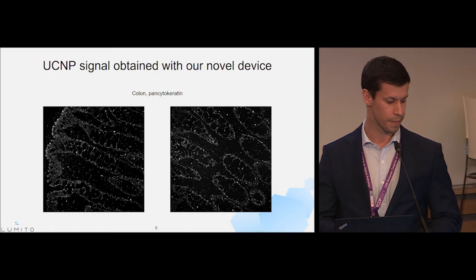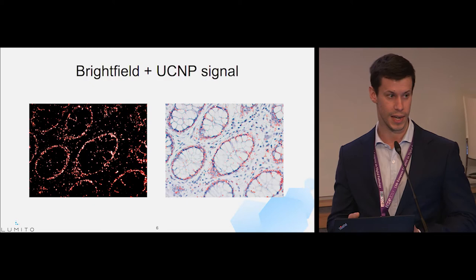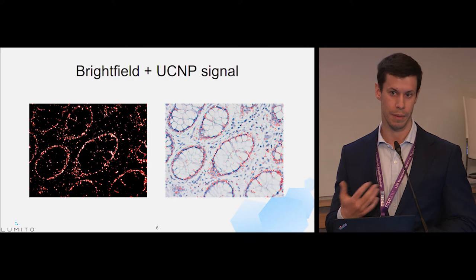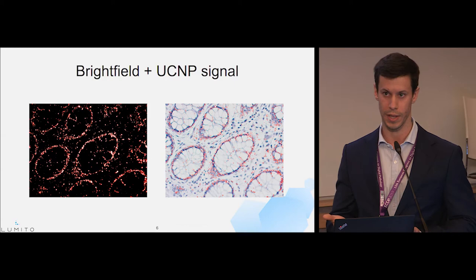Another advantage is that the UCMP signal can be shown on one image together with hematoxylin or H&E staining, which would normally autofluoresce in immunofluorescent staining. But here, since the excitation wavelength is completely different from the emission, you can have both at the same time. The pathologist can choose whether to show both layers simultaneously or just switch between them — you only need one slide to get both signals.